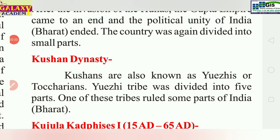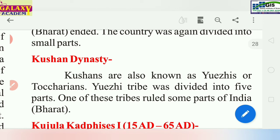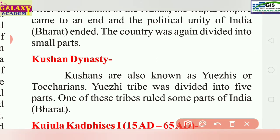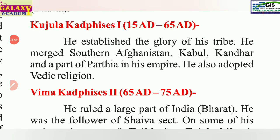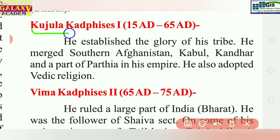The Kushana dynasty — also known as Yueji or Tocharians — were tribes who entered India and ruled part of it. Kujula Kadphises established the glory of his tribe. He merged southern Afghanistan, Kabul, Kandahar, and part of Parthia into his empire. He also adopted Vedic religion.